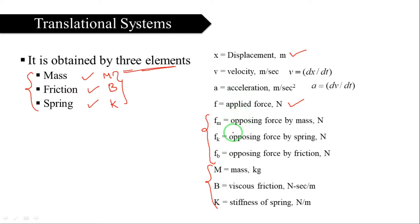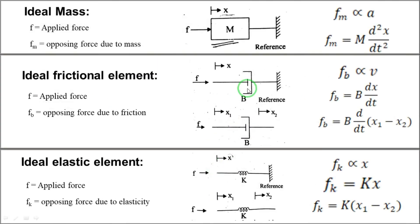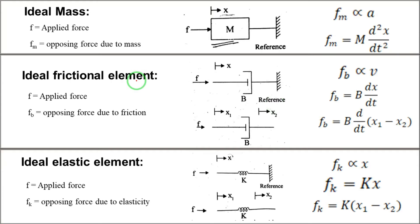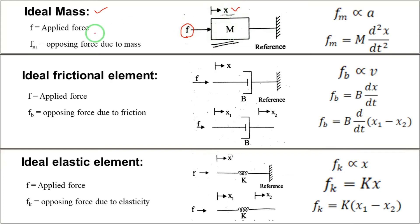Now we will look at the opposing force equations — what is F_M, F_K, and F_B. In the first case, there is an ideal mass: the object consists only of mass, with no friction and no spring force. This ideal mass element is connected to the reference, and we apply force F causing displacement X. The opposing force due to mass is indicated by F_M.